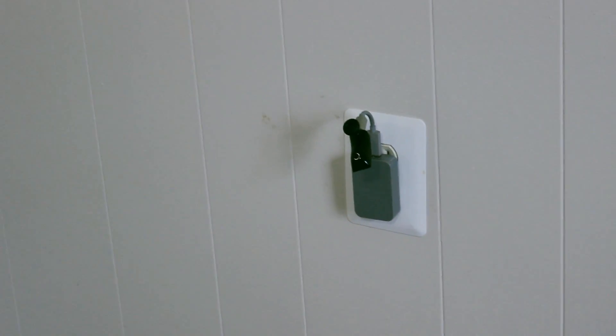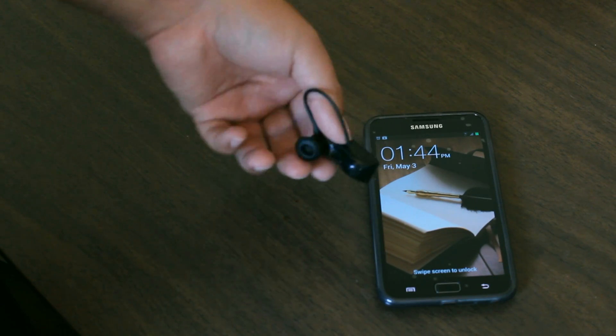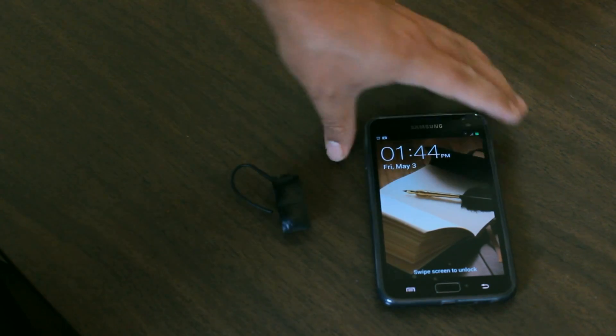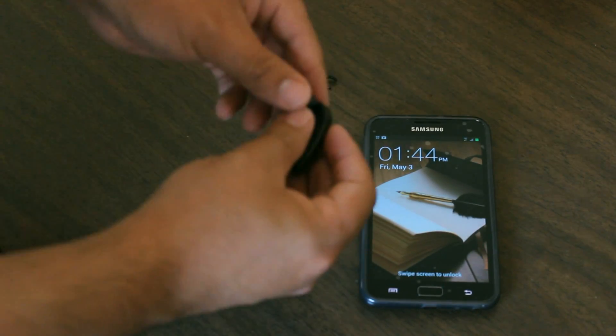The Bluetooth headset that we will be using today is the Jabon Icon Thinker shown here. And this is the Samsung Galaxy Note with gel case and a screen protector.